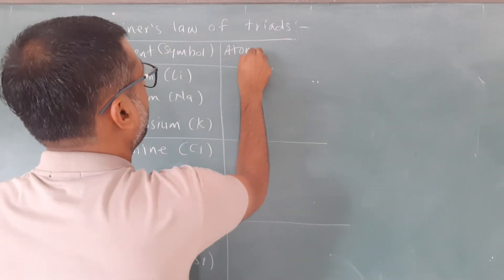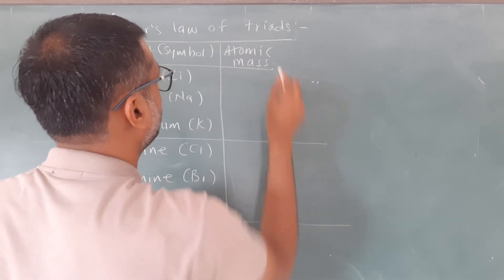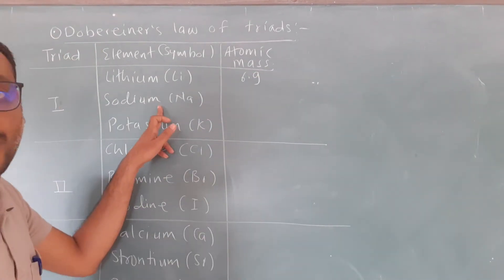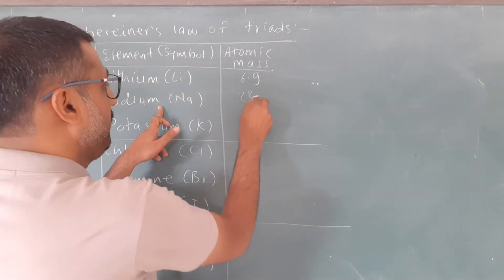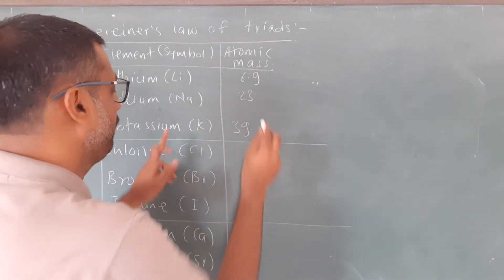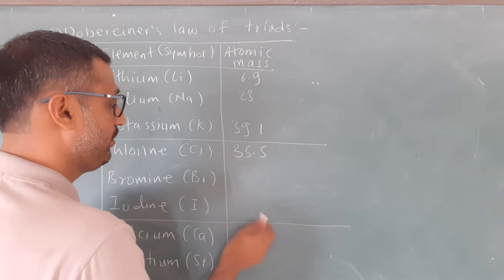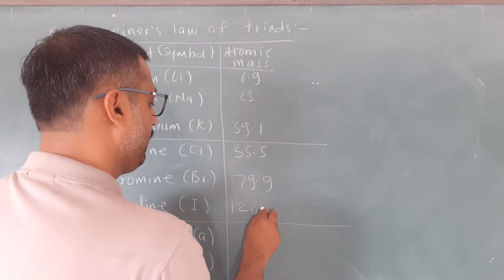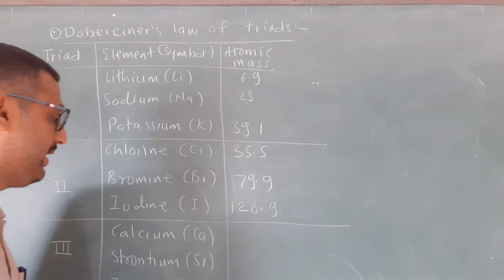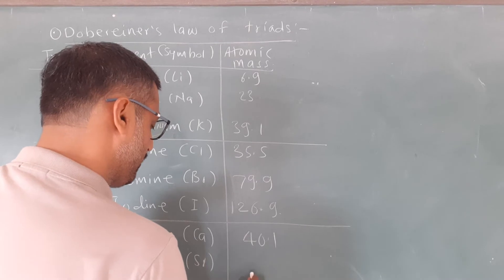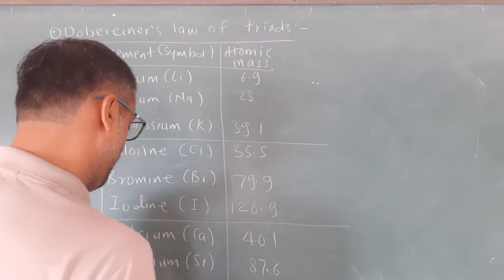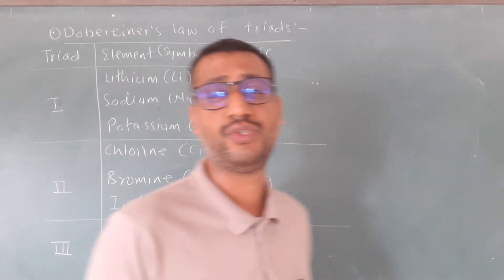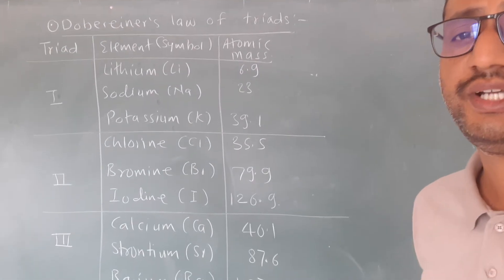Now, what are the atomic masses of these elements? Let me write here: lithium 6.9, sodium 23, potassium 39.1; chlorine 35.5, bromine 79.9, iodine 126.9; calcium 40.1, strontium 87.6, and barium 137.3. These are the atomic masses of the elements in the three triads of Dobereiner.